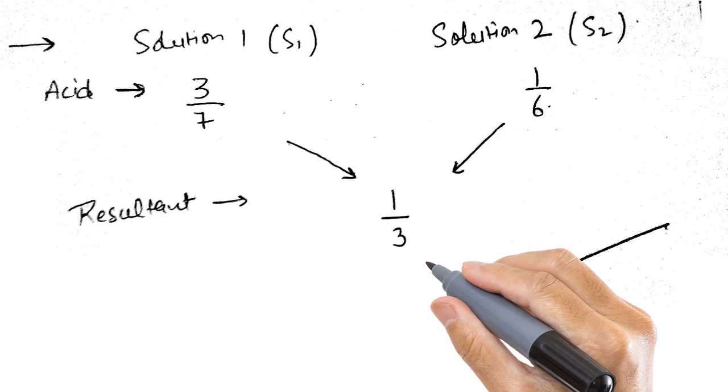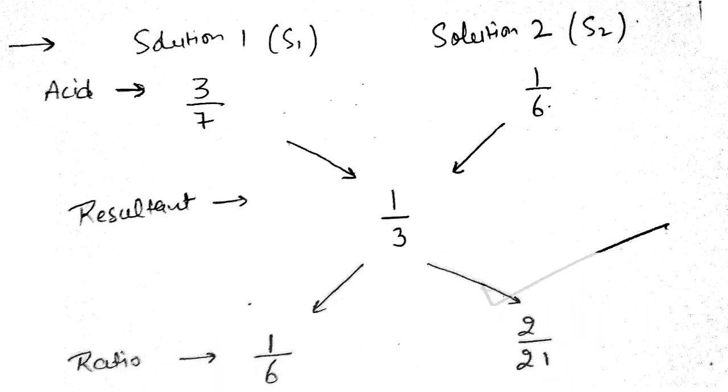This is the right way to solve the question. After this we will do it in the similar way. From left to right we will subtract and write the solution. 3 by 7 minus 1 by 3 is 2 is to 21, and 1 by 3 minus 1 by 6 is 1 is to 6.